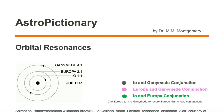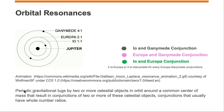In this AstroPictionary video, we're going to go over orbital resonances. Orbital resonances are periodic gravitational tugs by two or more celestial objects in orbit around a common center of mass that result in conjunctions of two or more of these celestial objects — conjunctions that usually have whole number ratios.